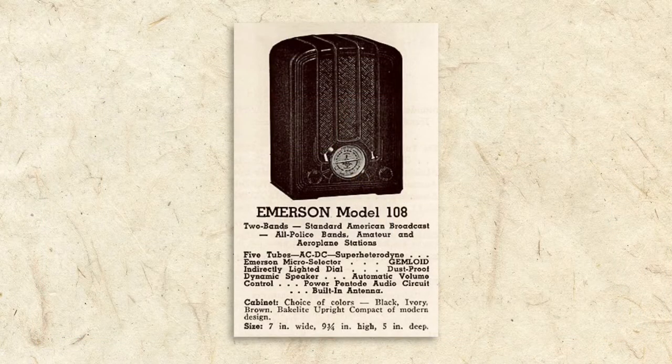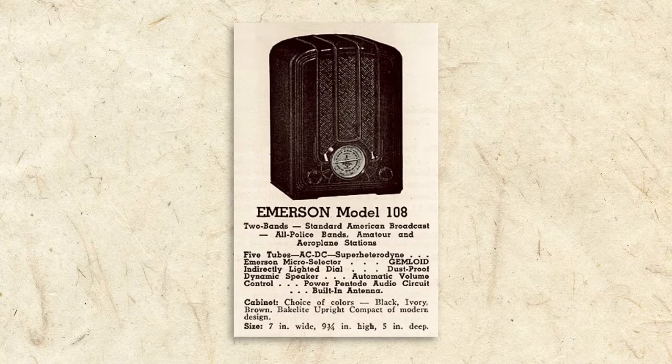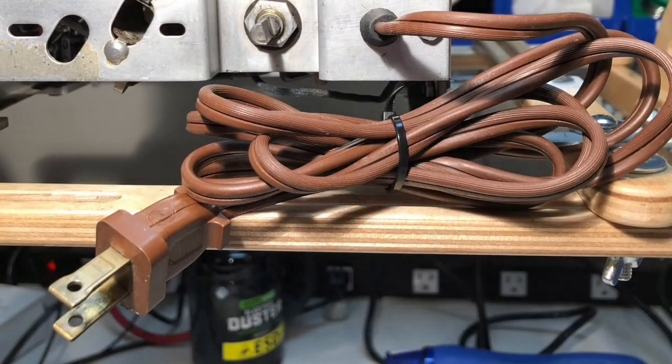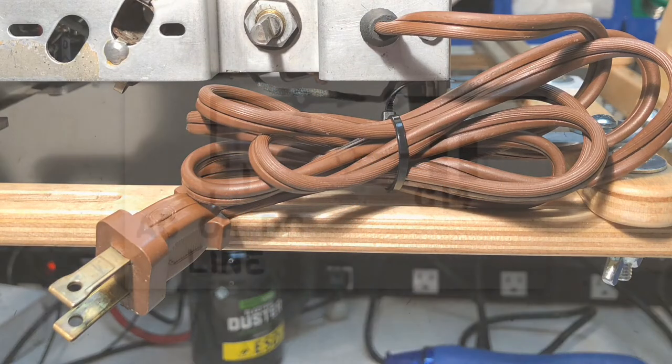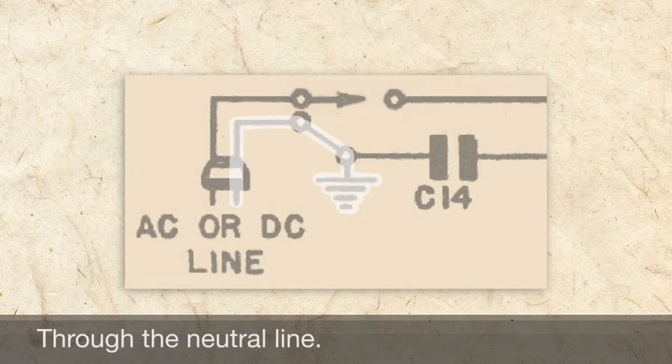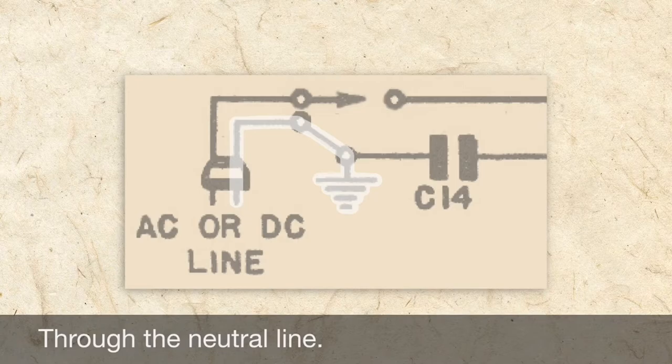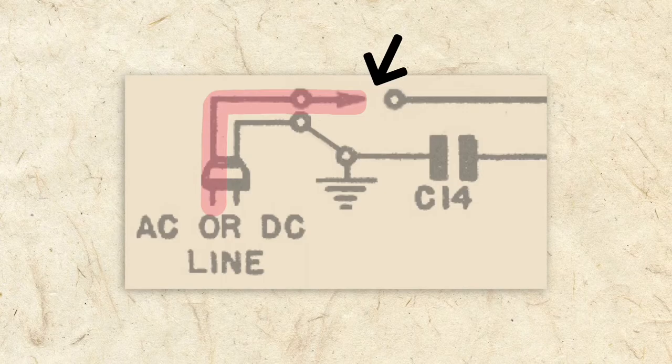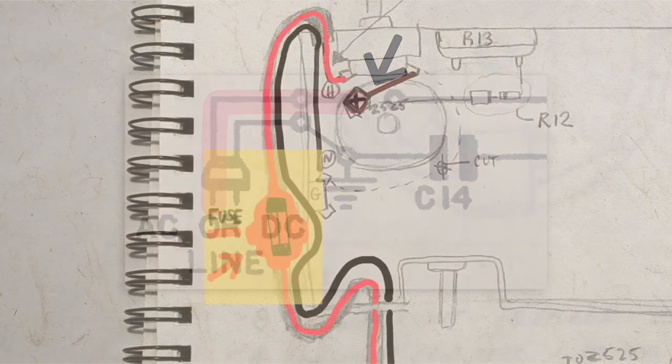To make our All-American 5 radio safer, we need to update its wiring to more closely meet modern standards. The plug needs to be polarized and the circuit needs to be rewired so that the chassis is always connected to ground. In addition, we need to wire the hotline to the switch so it's out of circuit when the radio is turned off. Adding a fuse won't hurt either.